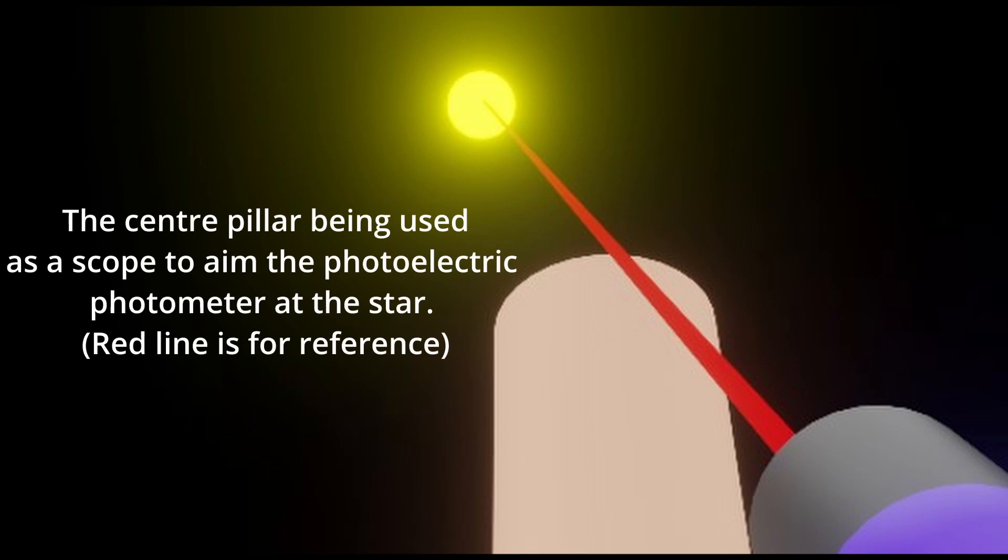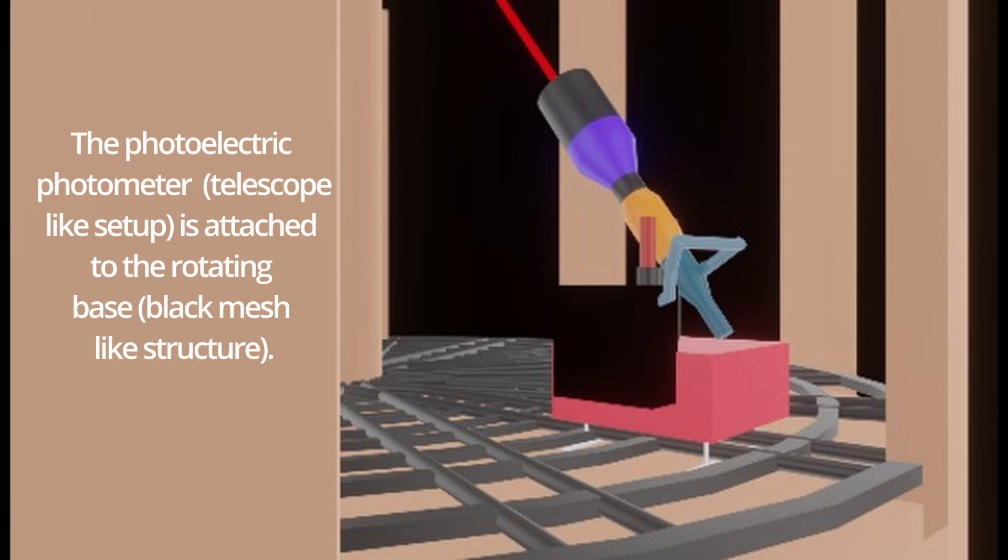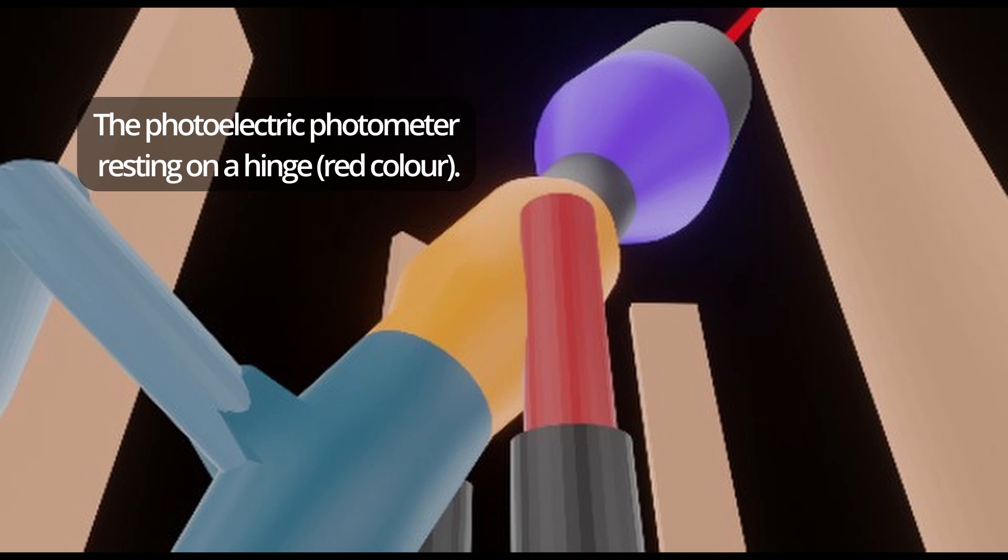These pictures show how the photoelectric photometer along with the telescope will be placed on the Ramayantra to modify it and how it will look at the stars and detect the exoplanets.